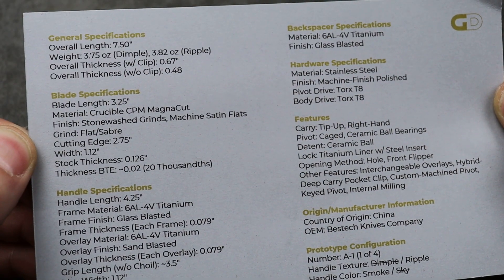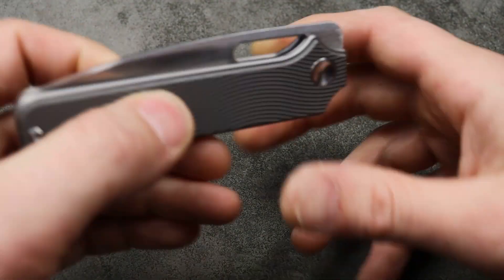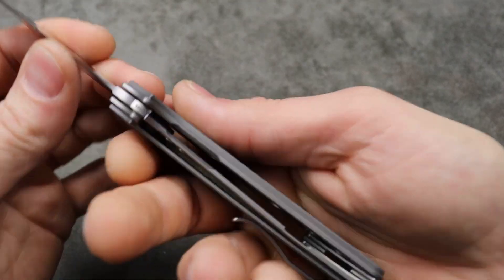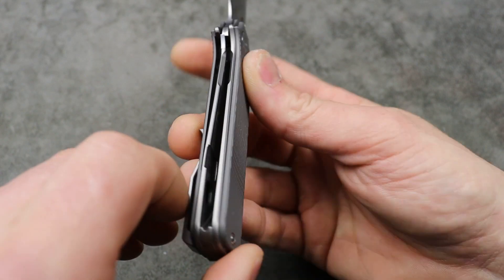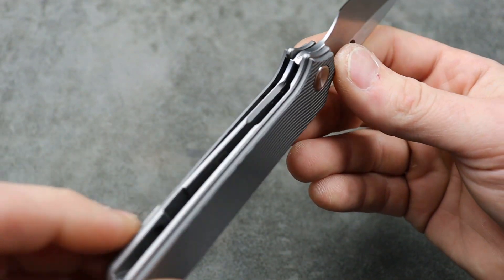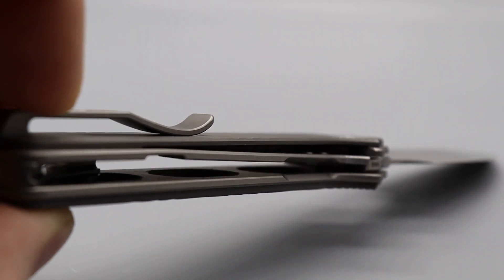And it is titanium. It is a titanium liner lock. The OEM is Bestech. So we have titanium over titanium liners. I really love to see that titanium on titanium. That's awesome. You can see we have a steel lock bar insert in there.